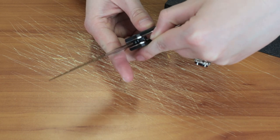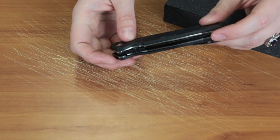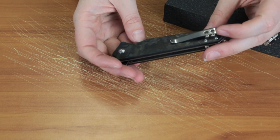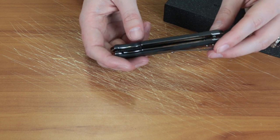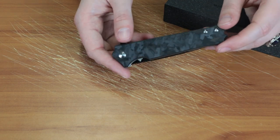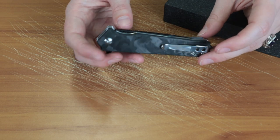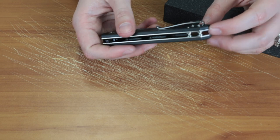Of course it is a liner lock. It's got the satin finish liners here. It's got the satin finish tip up pocket clip. They could have easily made this reversible but they did not. A little disappointing for our lefties and me included. It's got barrel spacers, satin finish as well.